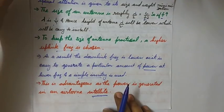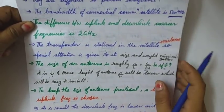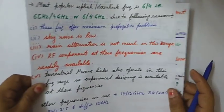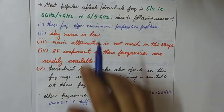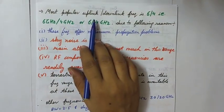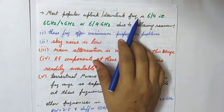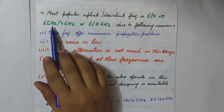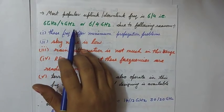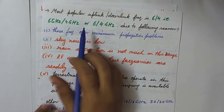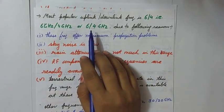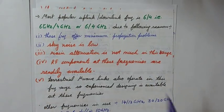This is the main reason. Now the frequencies used - most popular uplink and downlink frequencies are 6 gigahertz and 4 gigahertz, oblique 4 gigahertz, that is 6 by 4 gigahertz. You can write 6 is the uplink and 4 is the downlink.